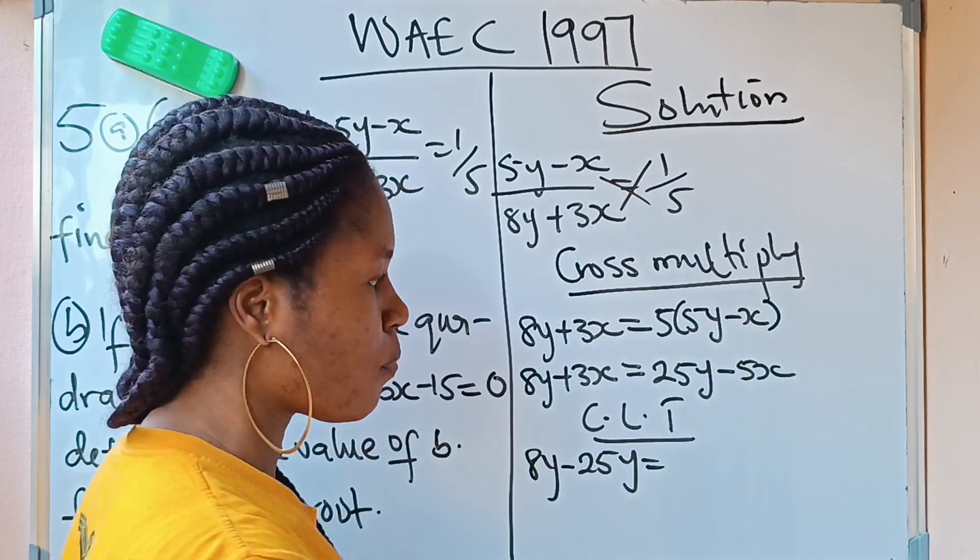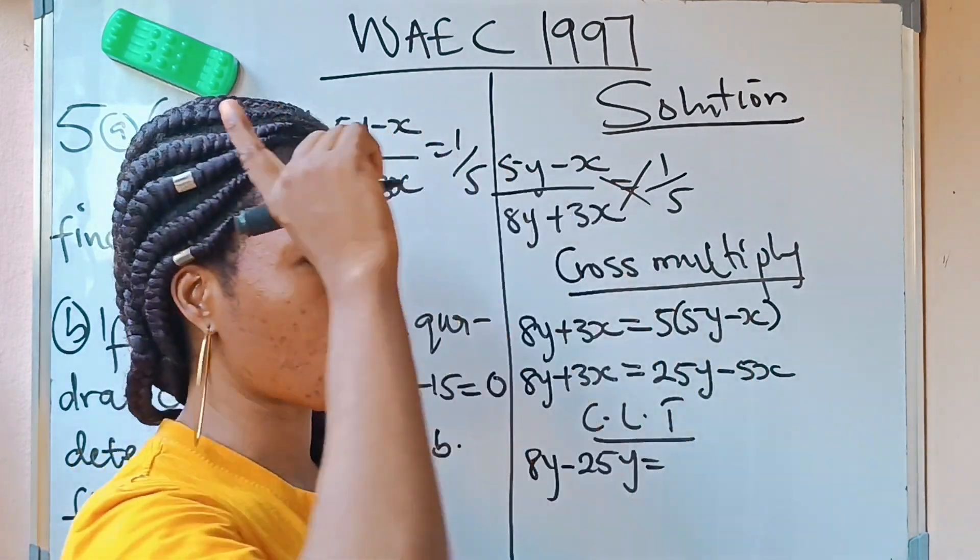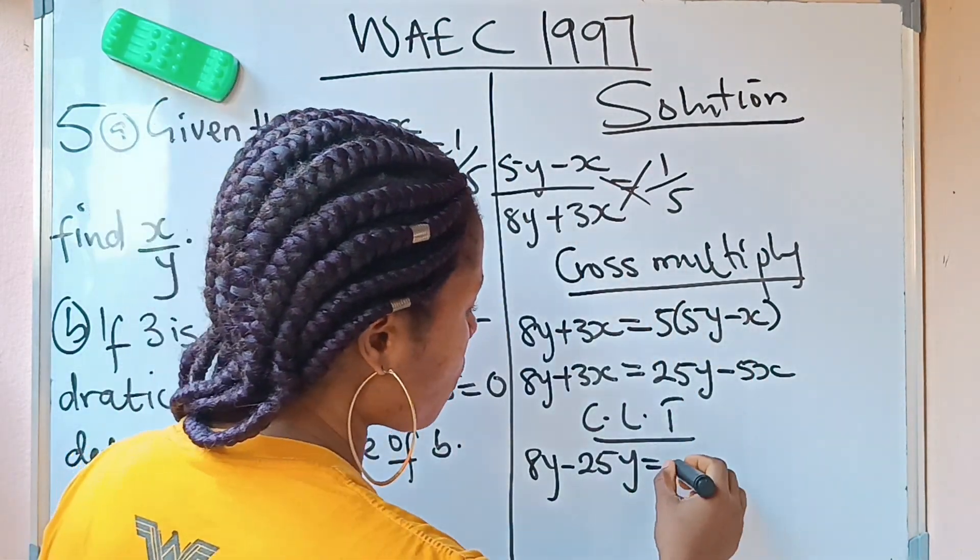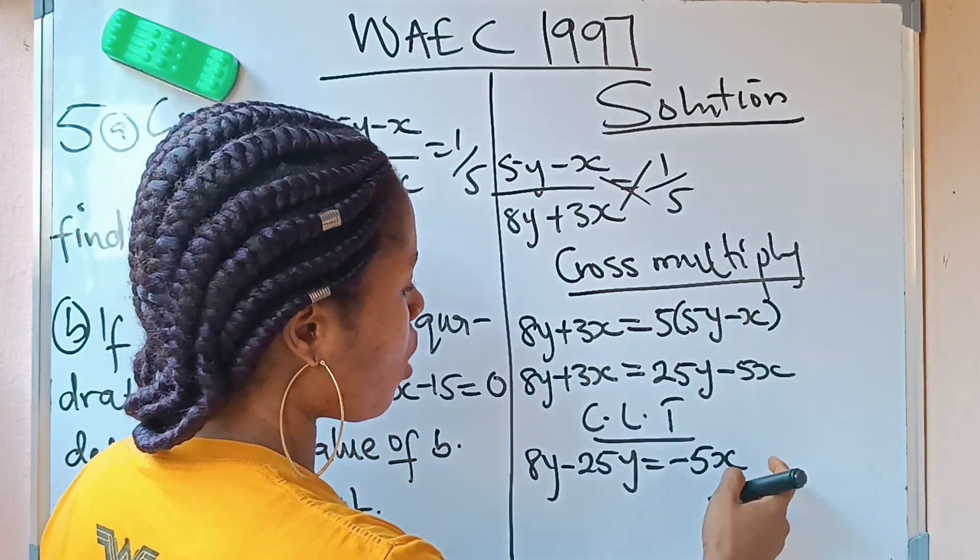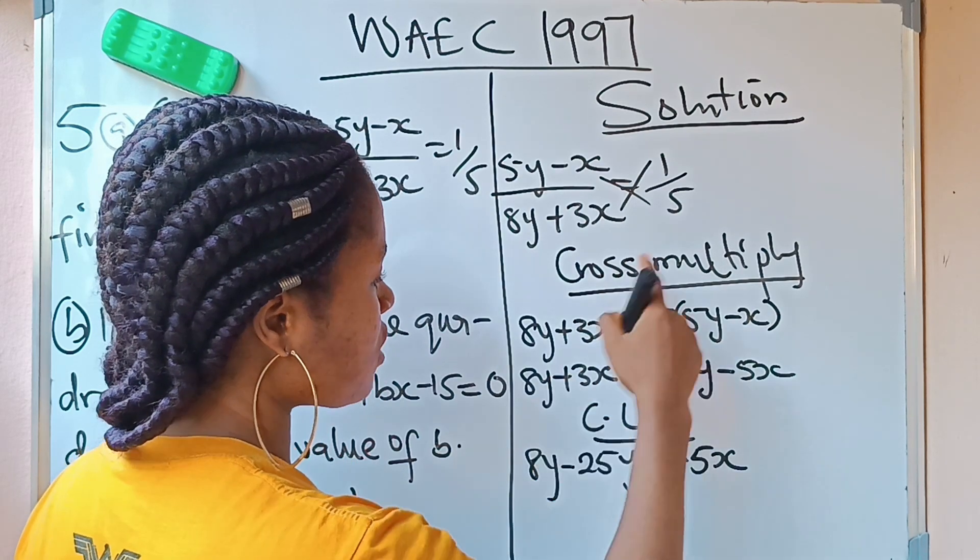Minus 5x was remaining. So what I'm going to do, I'll write down minus 5x that was remaining. Then this plus 3x will cross over to come and meet it. And if plus 3x crosses over, it becomes minus 3x. Hope you are getting me.